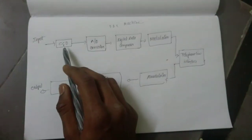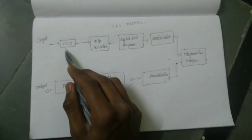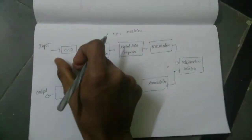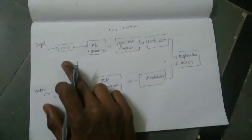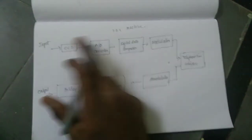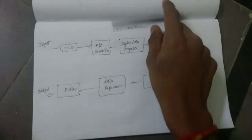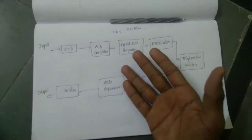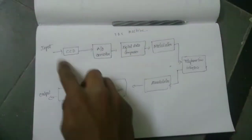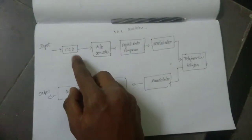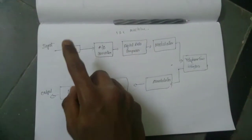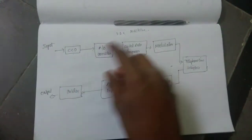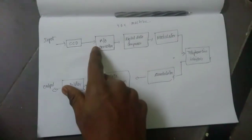CCD full form: Charge Coupled Devices. It is a light-sensitive semiconductor device which converts the printed information into an electrical signal. This block converts printed information into an electrical analog signal.